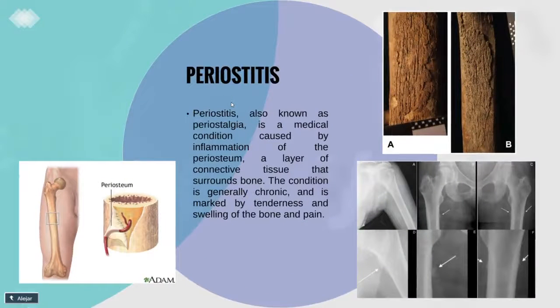Periostitis is also known as periostalgia. It is a medical condition caused by inflammation of the periosteum, a layer of connective tissue that surrounds bone. The condition is generally chronic and it is marked by tenderness and swelling of the bone.